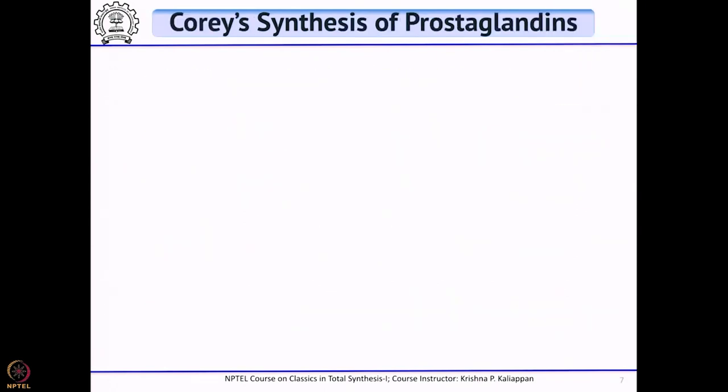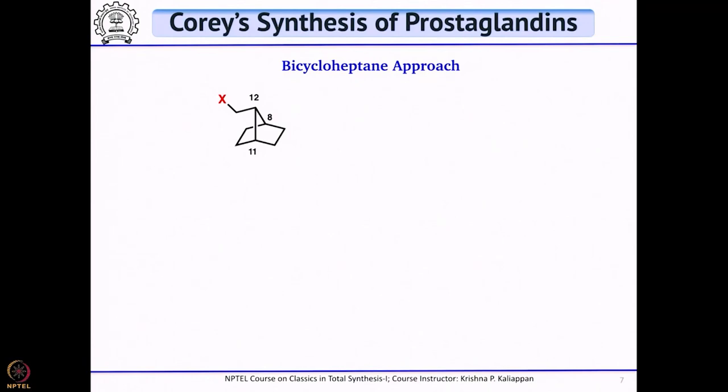As I said, there are quite a few total syntheses, but the first total synthesis was reported from Professor Corey's laboratory. Even today that synthesis is considered one of the best syntheses of prostaglandins. Their retrosynthesis is based on a few key reactions. First of all, his basic idea is what he called the bicycloheptane approach — he starts from a bicyclo[2.2.1] system having a CH2X group.